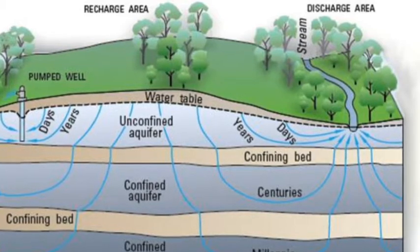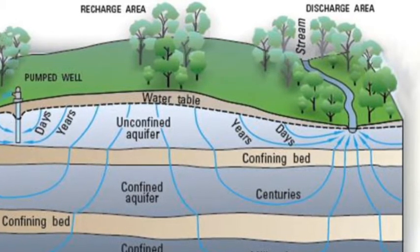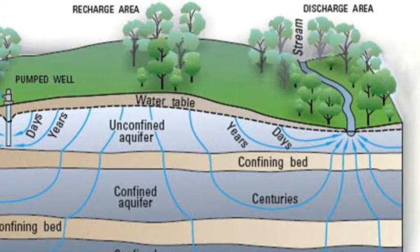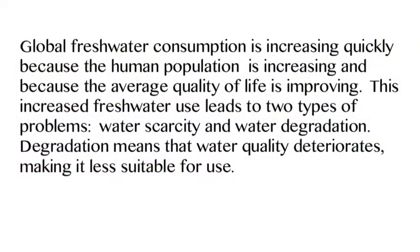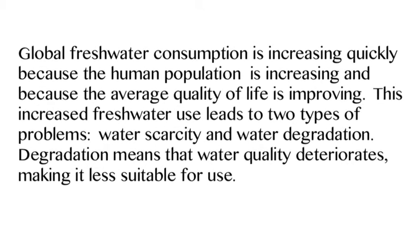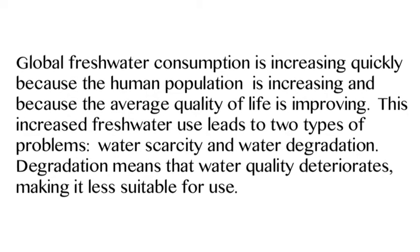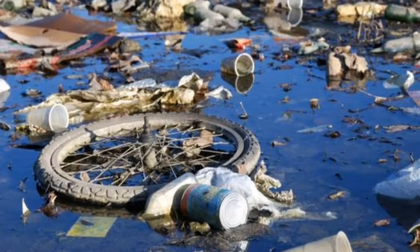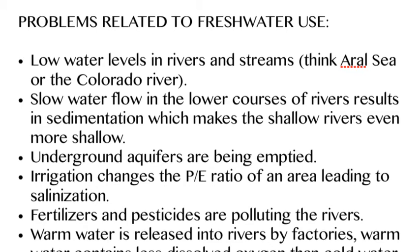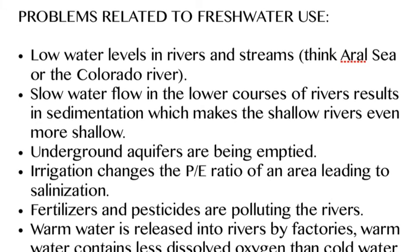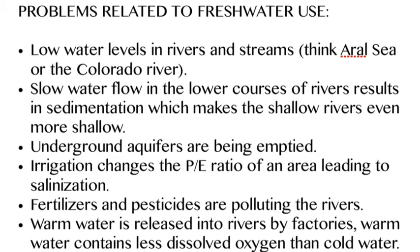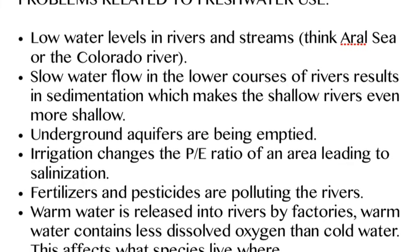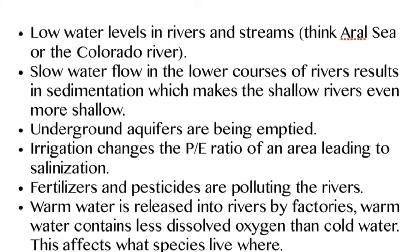Take an aquifer as an example — think of it as a rock sponge underground. As it rains, water percolates down through soil and rock and gets stored in that sponge. You can dig a well and pull water up to drink, or spray it over your fields, but the problem is you consume it faster than it can replenish itself. As the world gets wealthier and demands more, we use more freshwater, so demand is becoming greater, not less. This leads to low water levels in rivers and streams, rivers running slower, and silt settling making them even more shallow.